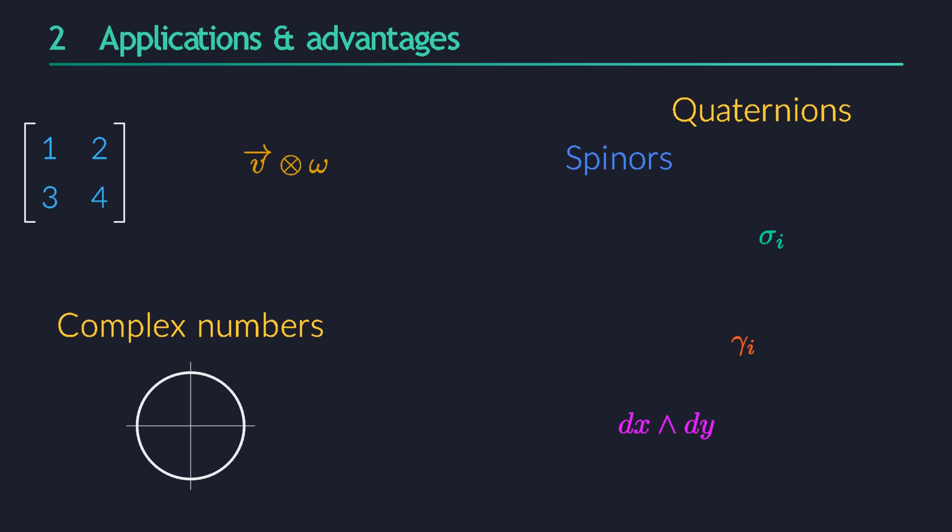So every time we turn a corner, we will bump into something familiar, but in a new form. A much simpler form. It makes you realize that something you already knew and understood has an additional structure, or meaning, or layer, or purpose that you hadn't noticed yet.